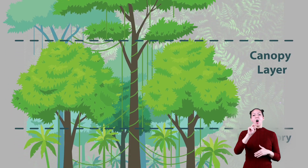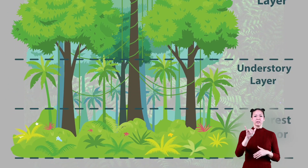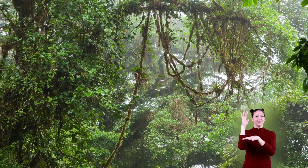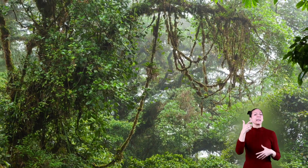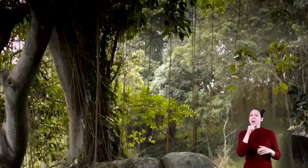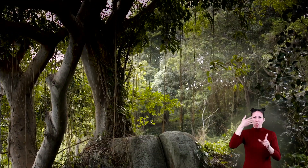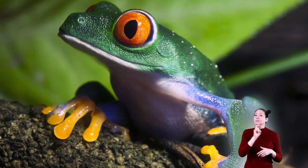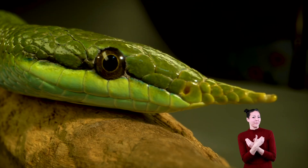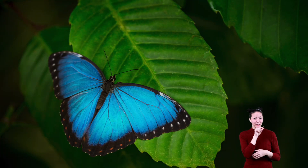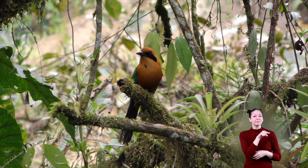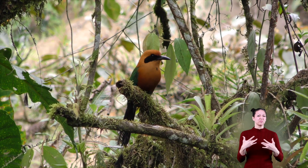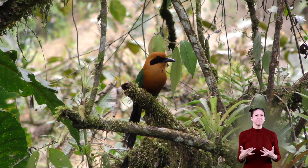The understory layer includes vines and other thick vegetation, and does not get a lot of sunlight. Frogs, snakes, butterflies, and birds are the only creatures who tend to live there.